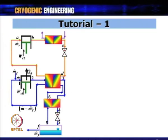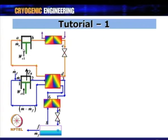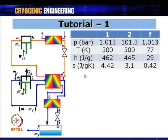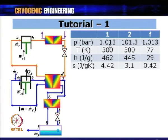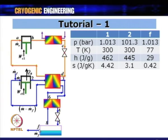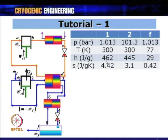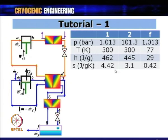For nitrogen in the Linde-Hampson circuit, the key state points are 1, 2, and F. Point 1 is at 1 bar, 300 K; point 2 is after compression at 100 bar, 300 K; point F is the saturated liquid at 1 bar, 77 K (boiling point of nitrogen). Enthalpy values: h1 = 462, h2 = 445, hF = 29 J/g.